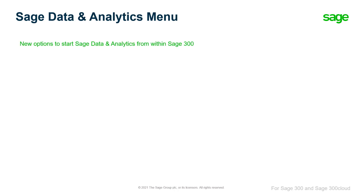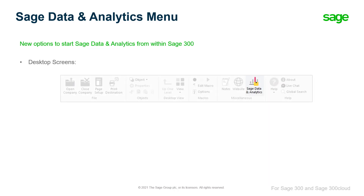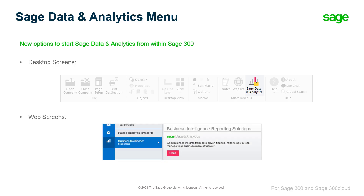For Sage Data & Analytics users, there are now new options to start it from within Sage 300. In desktop screens, it can be accessed by clicking on the Sage Data & Analytics icon on the desktop ribbon. In web screens, it can be opened from Business Intelligence Reporting on the navigation menu.